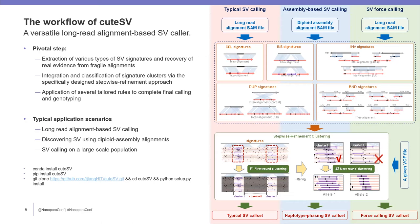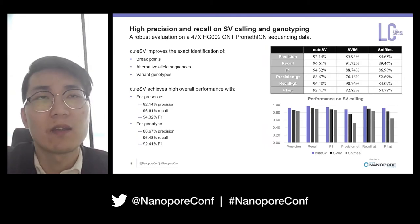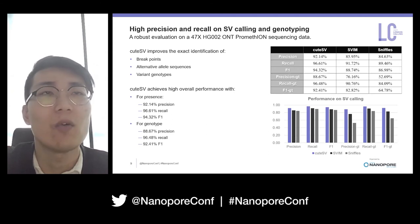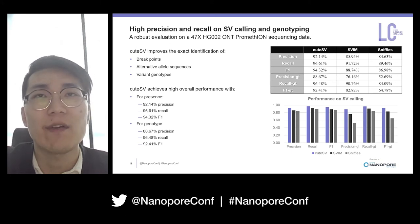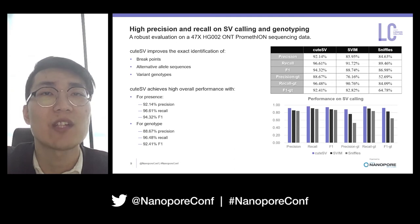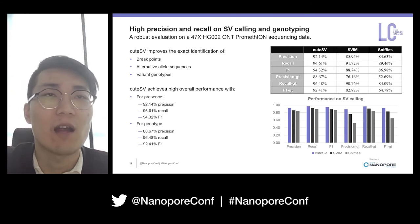Qtai3 has proven to present outstanding performance. Users can select conda or pip commands to install Qtai3 conveniently. The major contribution of Qtai3 includes three beneficial features. The first one is high precision and recall on structural variation calling and genotyping. Using 47x coverage HG002 ONT sequencing data performed for structural variation calling and validated on the most recent GIAB truth set, Qtai3 significantly improves the exact identification of breakpoints, alternative allele frequencies, and variant genotypes. Compared with other state-of-the-art methods, Qtai3 also achieved high overall performance on precision, recall, and F1 score.